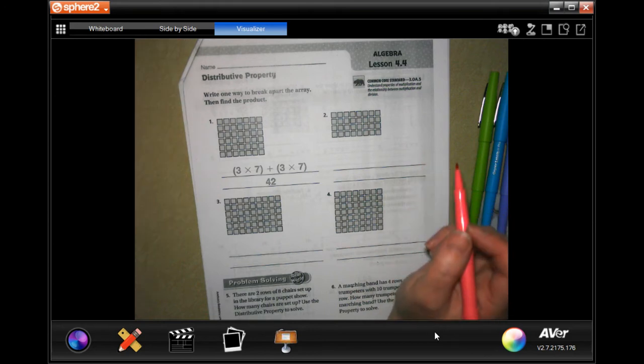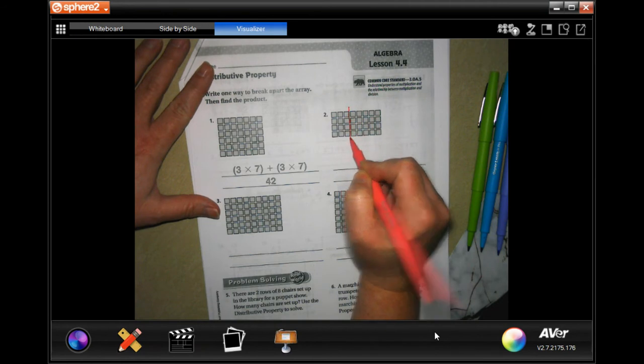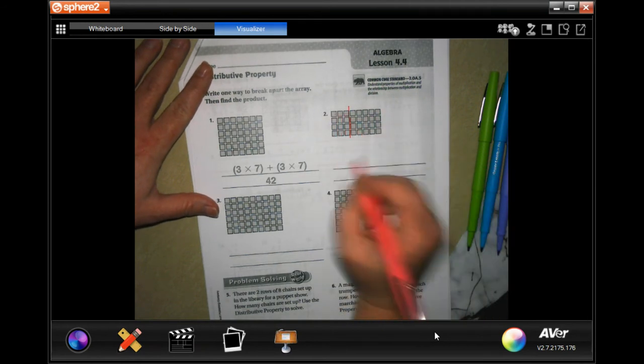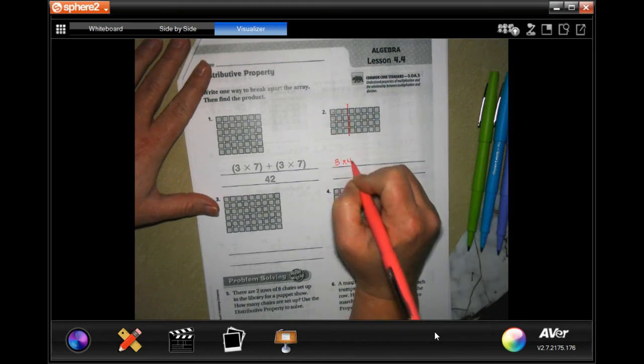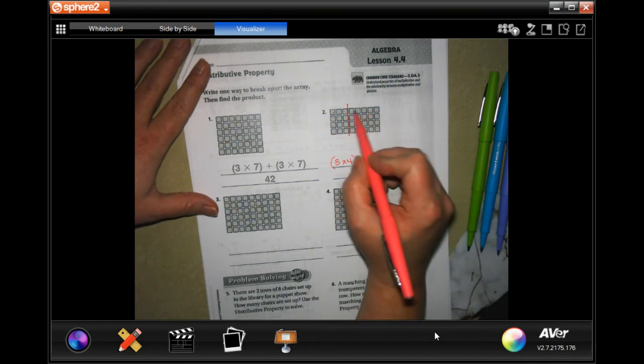On this one I'm going to go ahead and split it right here, which means we're going to go across one, two, three, and down one, two, three, four. We're going to put that in parentheses and add to it the one, two, three, four, five.